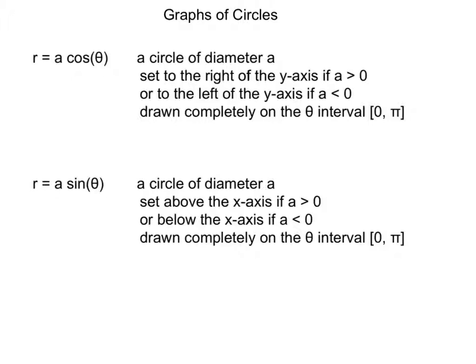This is going to be set to the right of the y-axis if a is greater than 0 and set to the left of the y-axis if a is less than 0. If a is greater than 0, you're going to have a circle sitting over here. If a is less than 0, you'll have a circle that's over here. It's either to the right or to the left of the y-axis, with the idea that a, or I suppose here negative a, sort of gives the diameter of the circle.